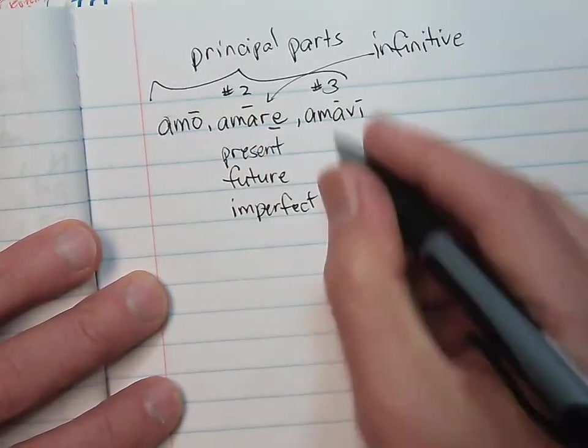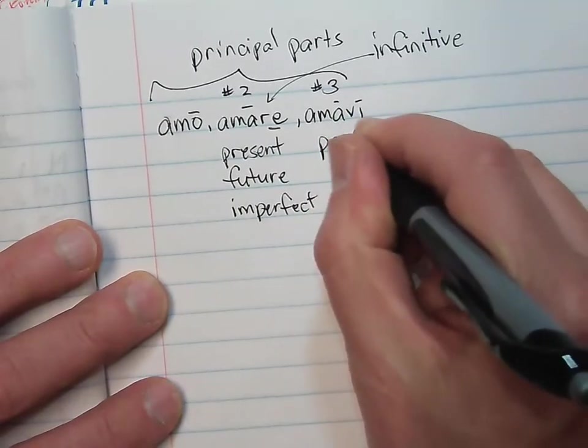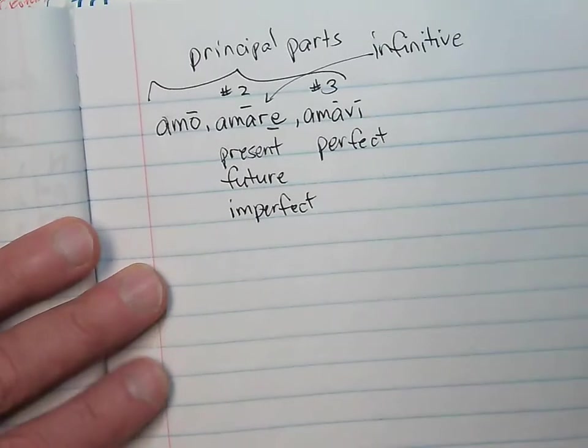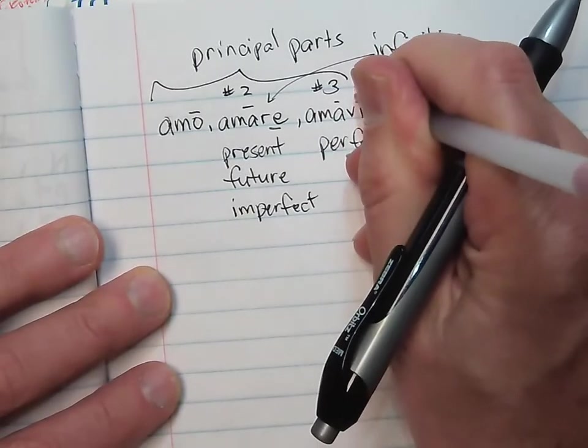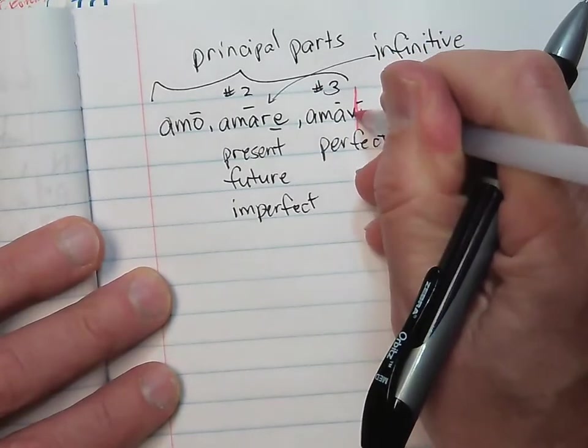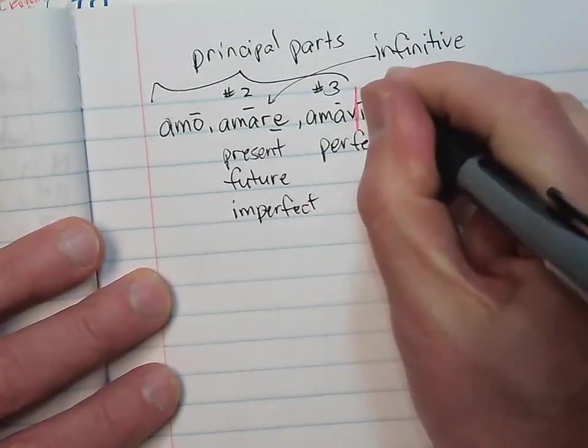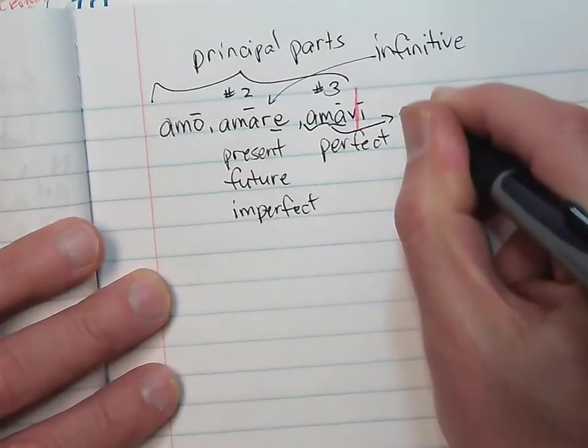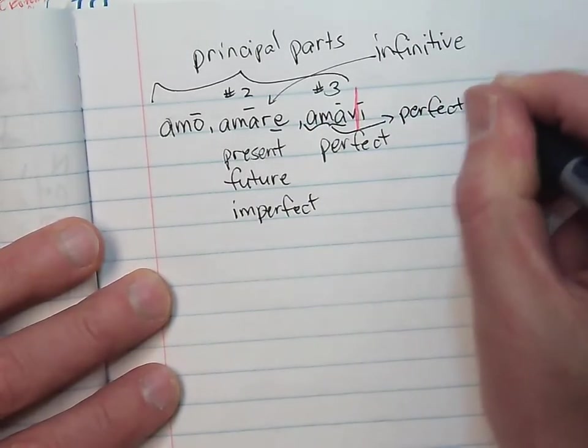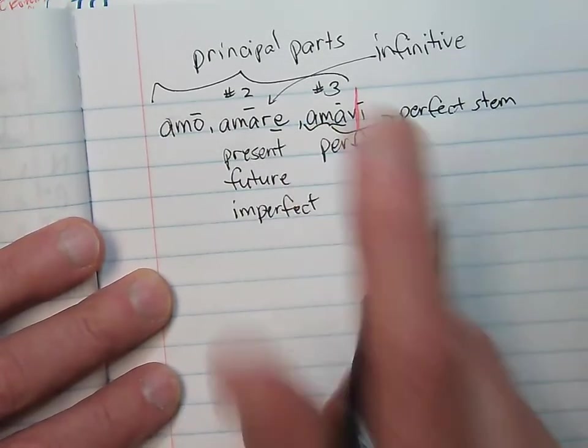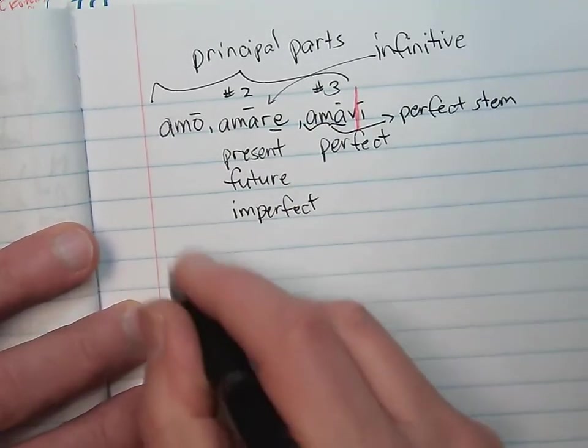But when I want to make the perfect tense, I'm going to start with the third principal part. What I'm going to do is I'm going to cut off the letter i, just like that. And when I cut the letter i off of the third part, I make what's called the perfect stem. The perfect stem is the permanent part of the word that I'm going to be using as I construct my tense.